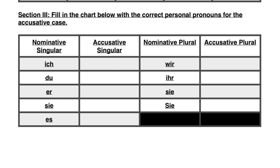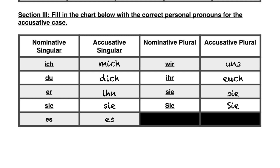The accusative case wouldn't be complete without covering the pronouns as well. If you have ich in the accusative case, you have mich — changing from 'I' to 'me.' Du changes to dich. Er changes to ihn. Sie stays the same, as does es. Wir changes to uns — 'we' to 'us' in English. Ihr changes to euch. And the last two sie's stay the same as sie.